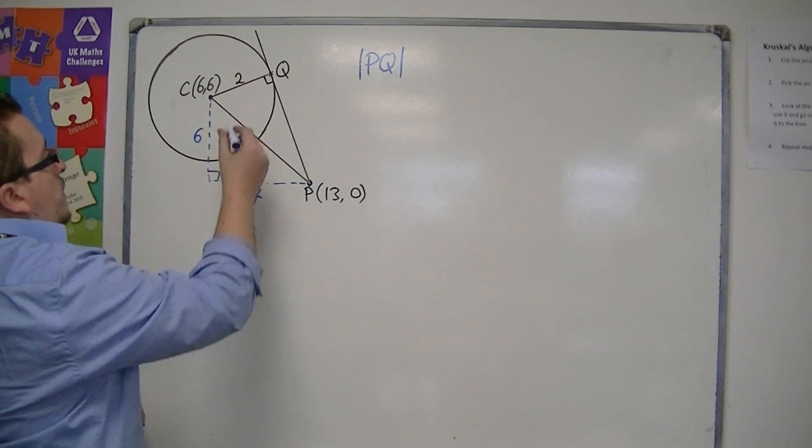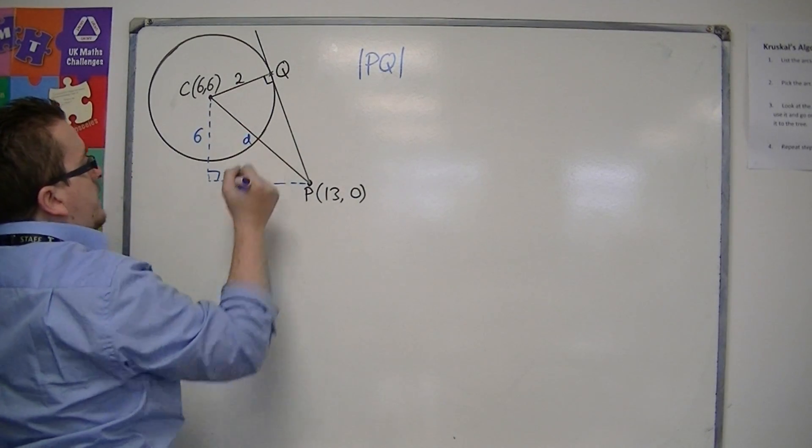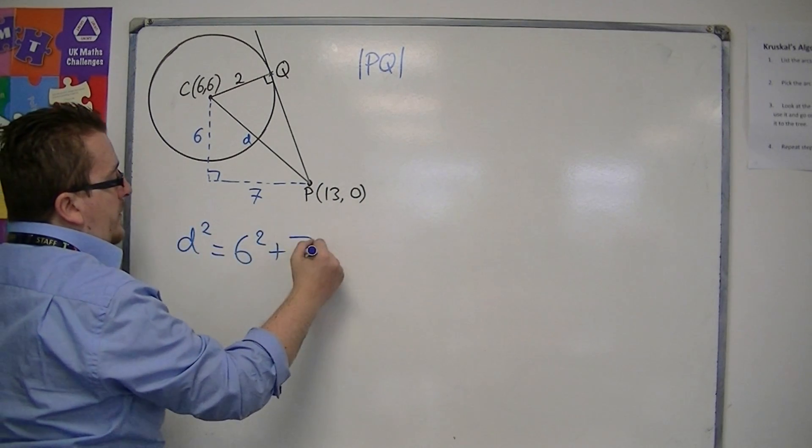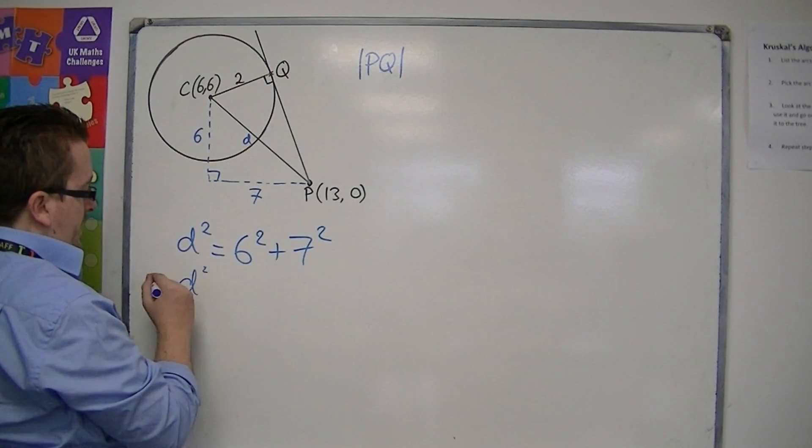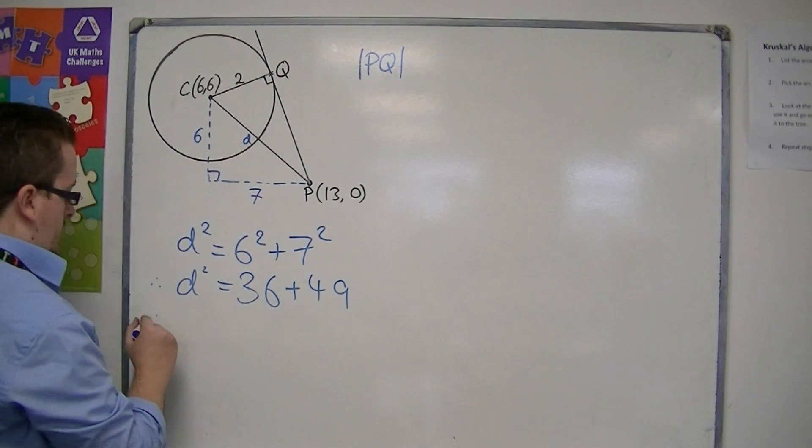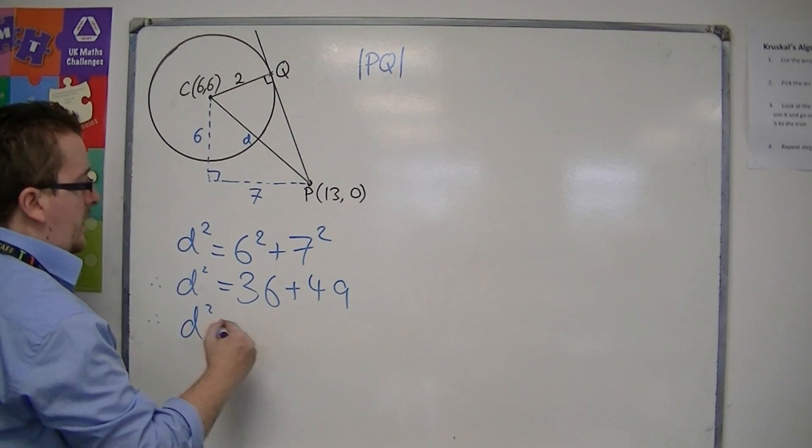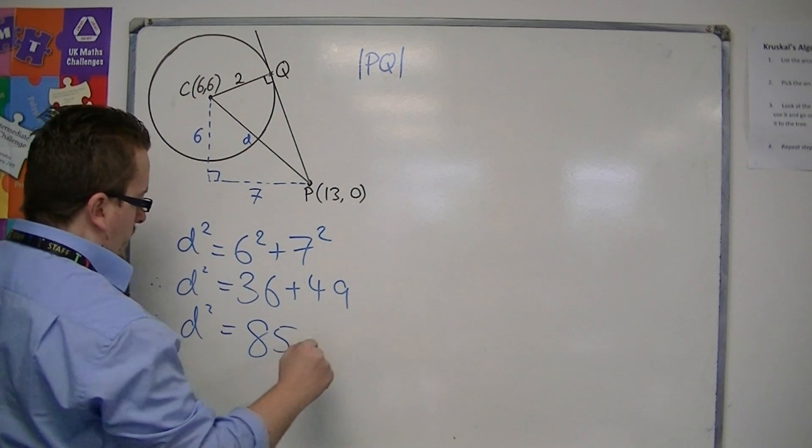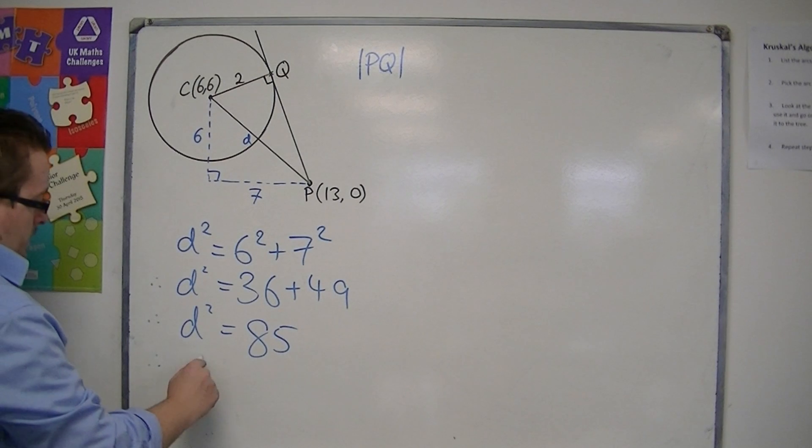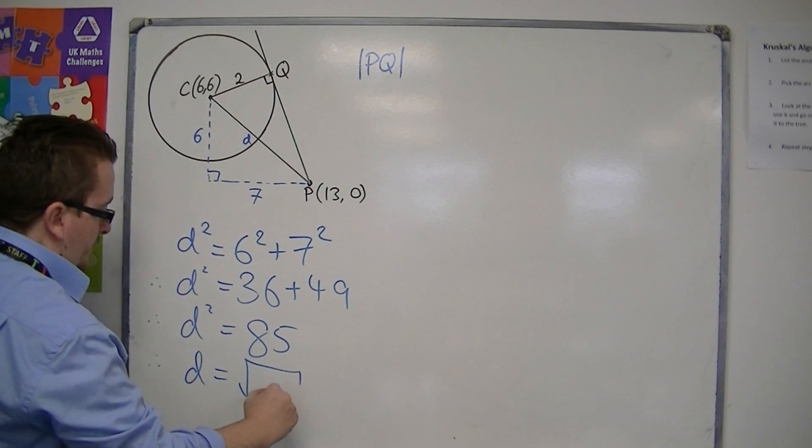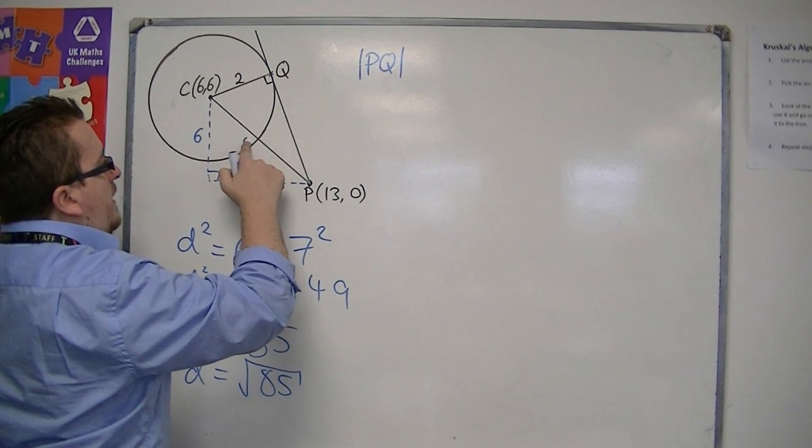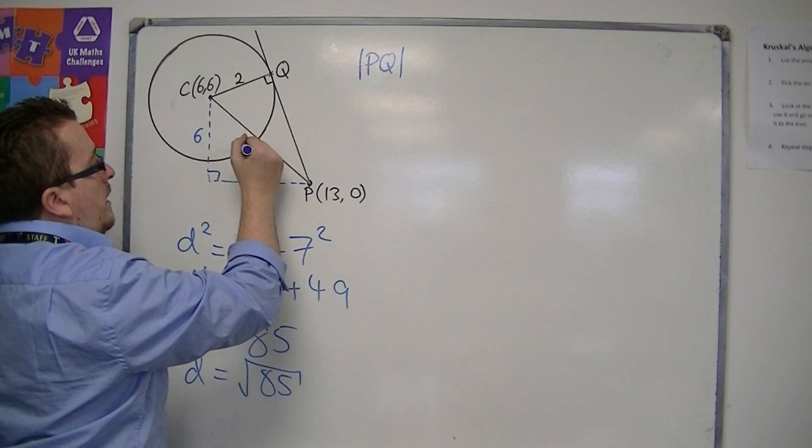So this length, let's call it d, is d² = 6² + 7². So d² = 36 + 49. Therefore d² = 85. So if we know that that length is now √85,